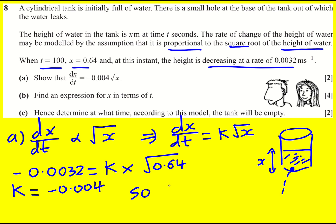And so dx by dt equals minus 0.004 times the square root of x as required. Okay, nice one.